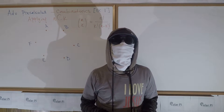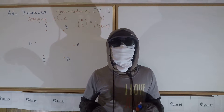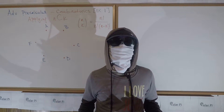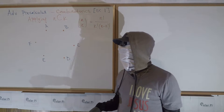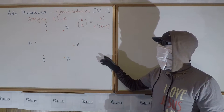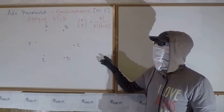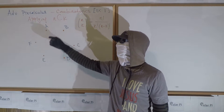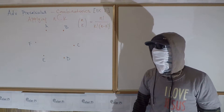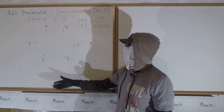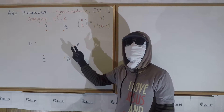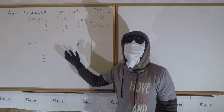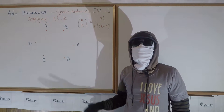In example 0, we got a feel for what we mean by n choose k and what it does. And in this first example, we're going to learn how to apply n choose k to the situation here of choosing two dots from six dots.